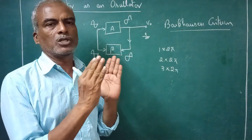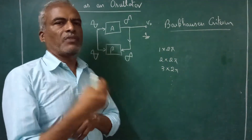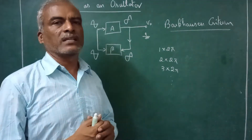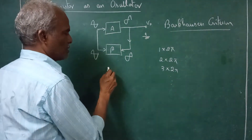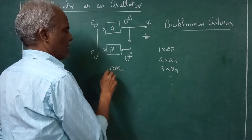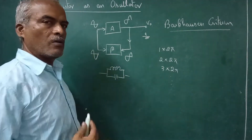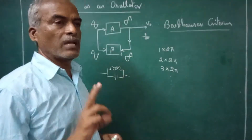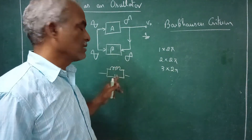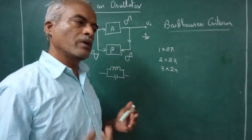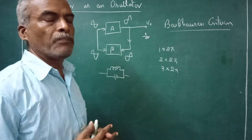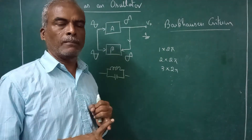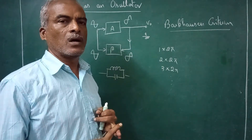This is a basic amplifier with a feedback network, which can be split into two parts: one is that we squeeze only a fraction of the output voltage, and then we have a tank circuit — basically an LC circuit, a coil and a capacitor. Or we can have RC circuits also. So transistor as an oscillator can have two types: LC type in the tank circuit, or RC, or crystal. Crystal is basically LC only.